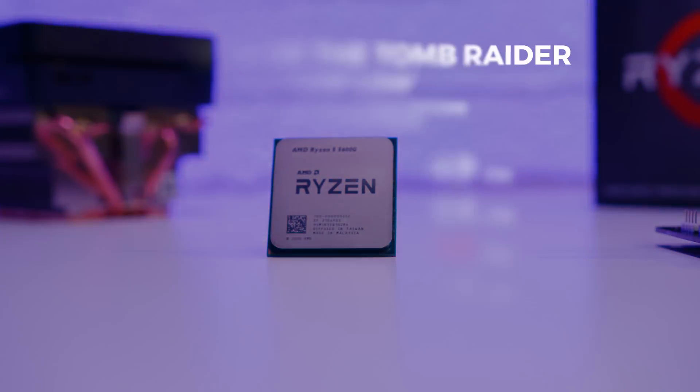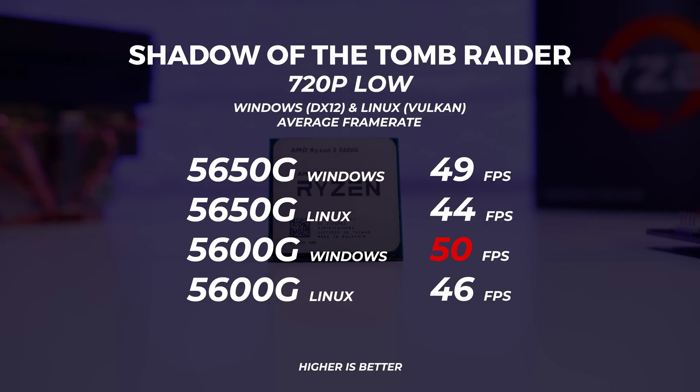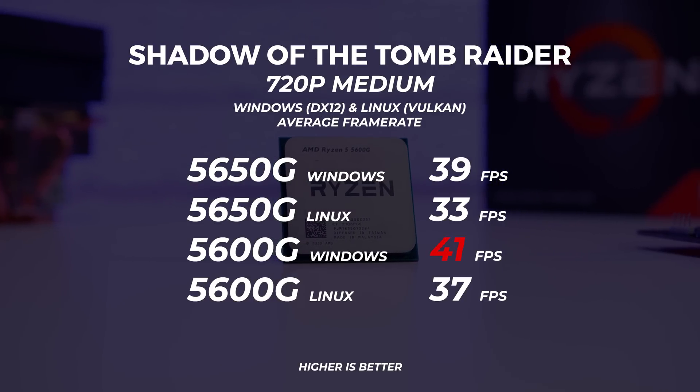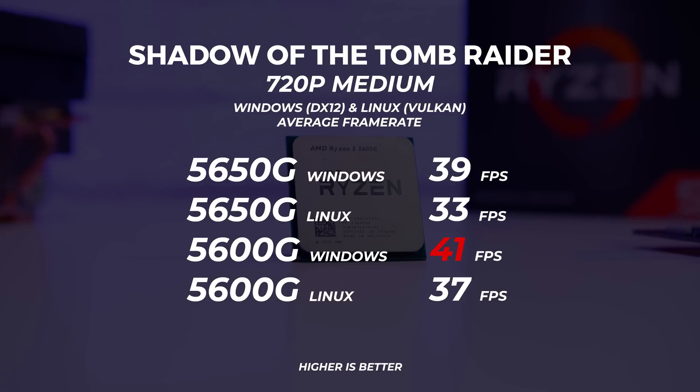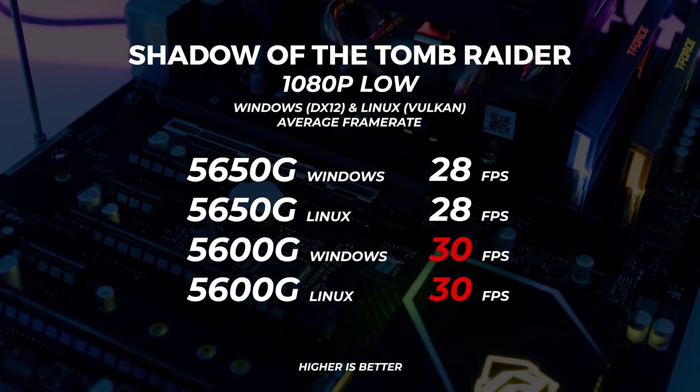On to APU performance in gaming and 3D benchmarks. We made a few adjustments to our regular testing to account for the lower power and VRAM assignment limitations, and we tested with 4 gigs of VRAM to keep things even between both APUs. We ran three different benchmarks that use the GPU and CPU in different ways across Windows and Linux. First up is Shadow of the Tomb Raider — the 5600G beats the 5650G at 720p low with 50 FPS, at 720p medium with 41 FPS, and at 1080p low both Windows and Linux see the 5600G at 30 frames per second.